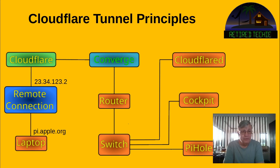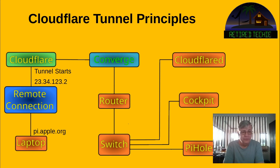I send the request out, and it goes through remote connectivity out onto the internet to a DNS server. It figures out that this subdomain domain name is registered with Cloudflare, so it sends it to Cloudflare. Cloudflare says yes, that's one of mine — so a secure tunnel between the laptop and Cloudflare is established. Then Cloudflare looks at the information we've entered and says it's somebody on Converge.